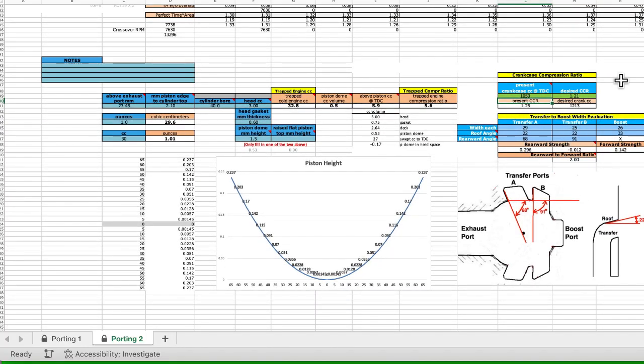And this helps you to calculate what you need to do for a different crankcase compression ratio. You can enter in different volumes here, and it'll show you the ratio here. And if you enter in the desired ratio here, it'll show you the crank cc's that are necessary.